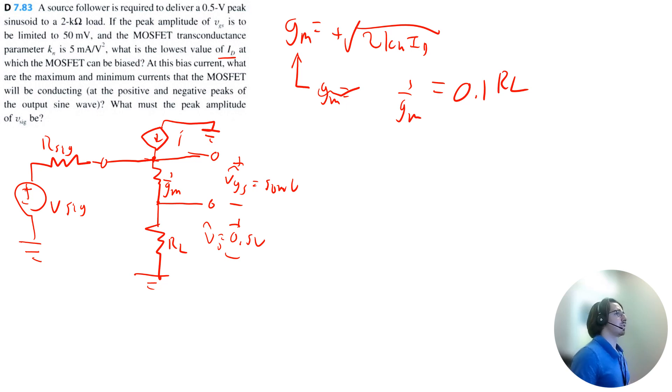So that means gm is equal to 1 divided by the load resistance times 0.1. I should probably clarify where I got the 0.1 from. It's just this voltage division. So 50 millivolts divided by 0.5 volt is equal to 0.1. Hopefully that clarifies that.